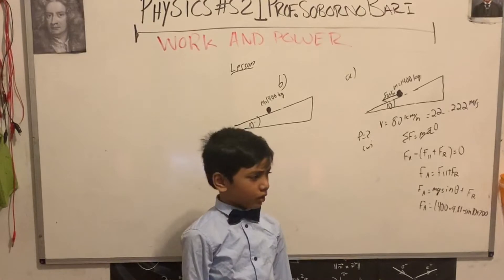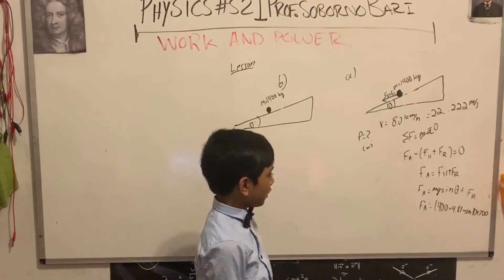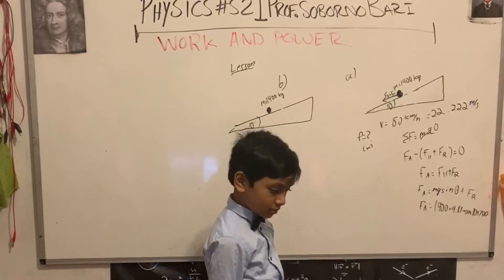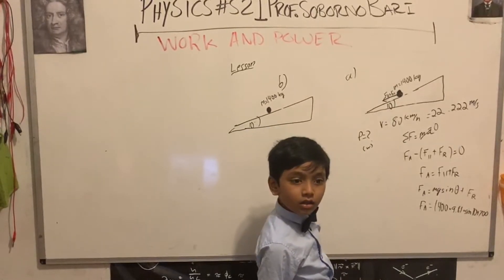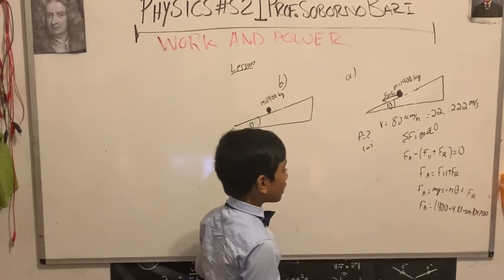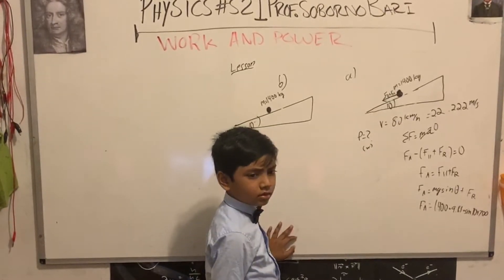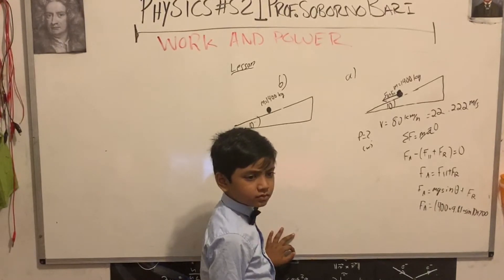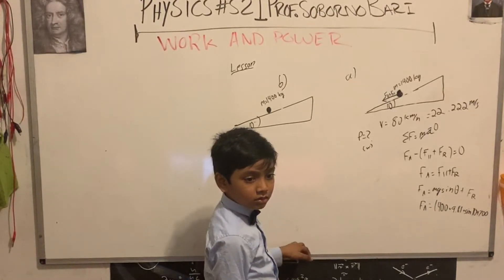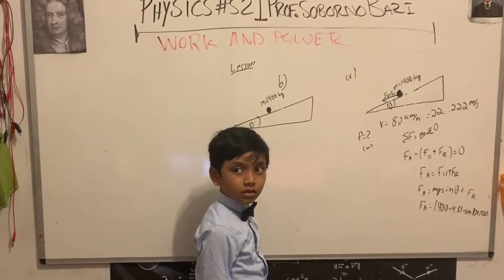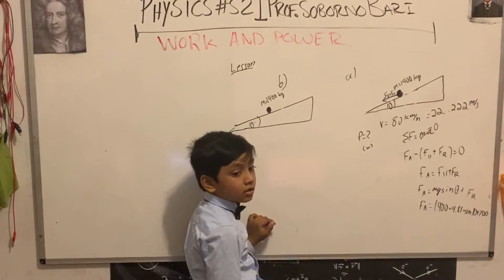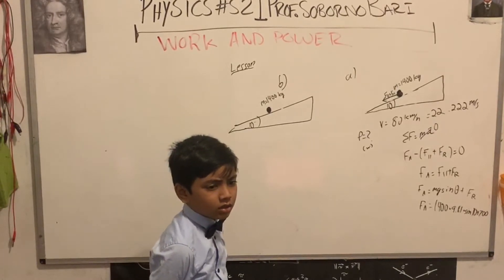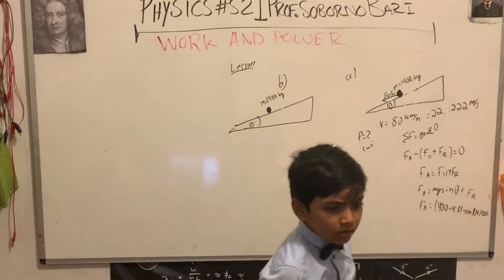Who would like to volunteer and calculate it? I'll volunteer. 1400 times 9.81 times sine 10, add back to 700. Sine 10 is 0.17 times 9.8, that is 1.7 times 1400 plus 700, so it's 3082. Great, 3082.